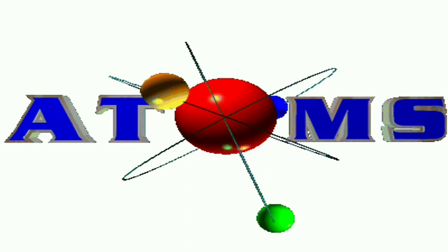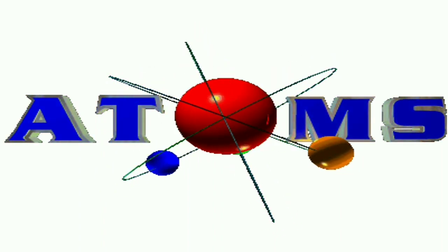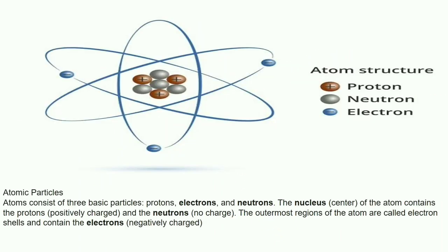Before heading deeper into the concept of electricity, we ought to know about the structure of an atom. All matter — such as solid, liquid, gas, and plasma — is composed of tiny particles called atoms. An atom consists of subatomic particles called protons, neutrons, and electrons. The protons and neutrons are held by the nuclear force at the center of the atom called the nucleus, and the electrons keep revolving around the nucleus in different electron shells or orbits. Protons are positively charged, neutrons are neutral, and electrons are negatively charged.